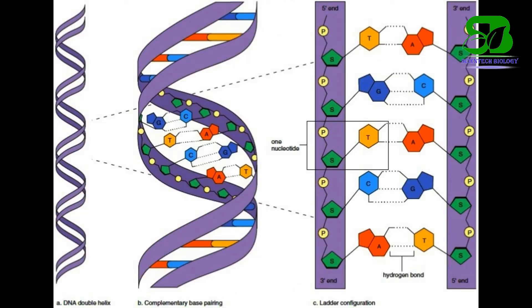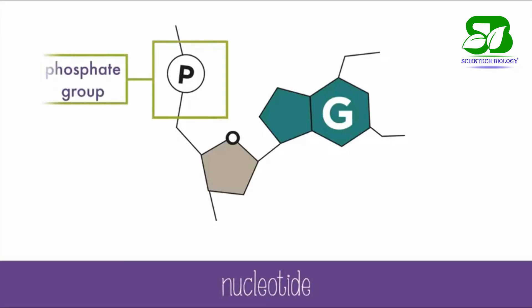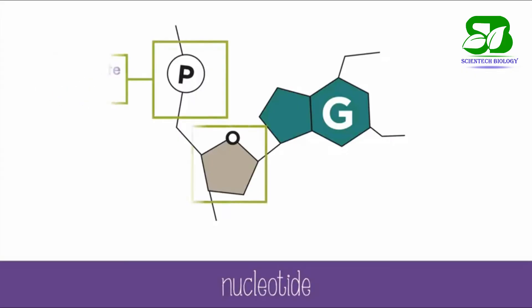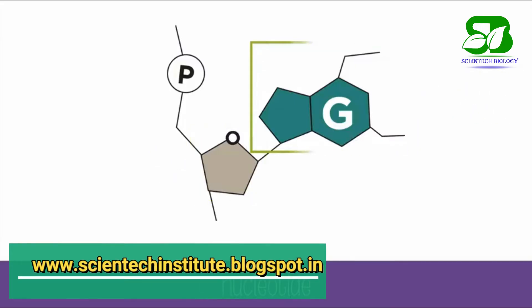DNA has repeating subunits, and those subunits are called monomers or nucleotides. The nucleotide has three main parts: a phosphate group, a sugar, and a nitrogen base.